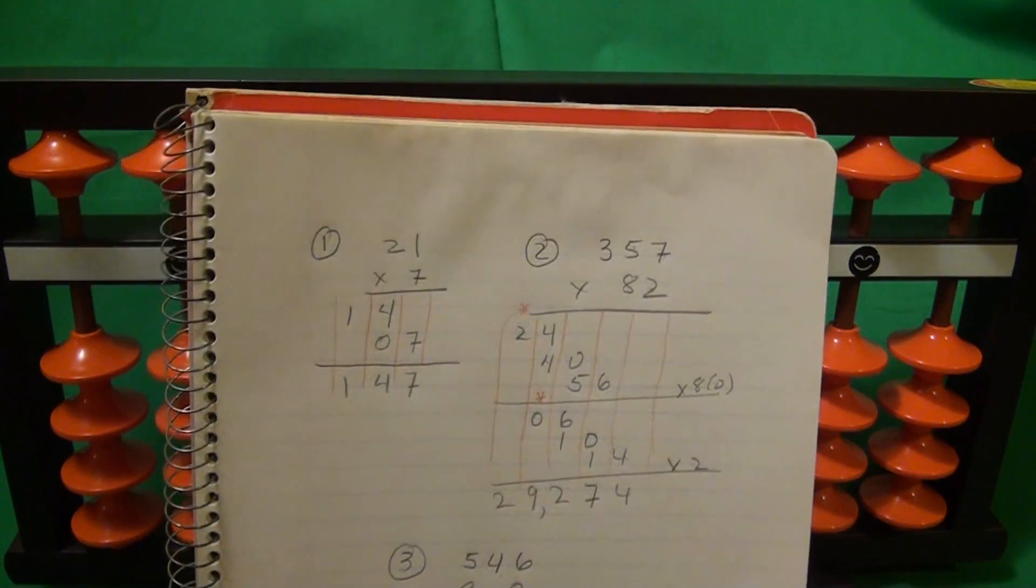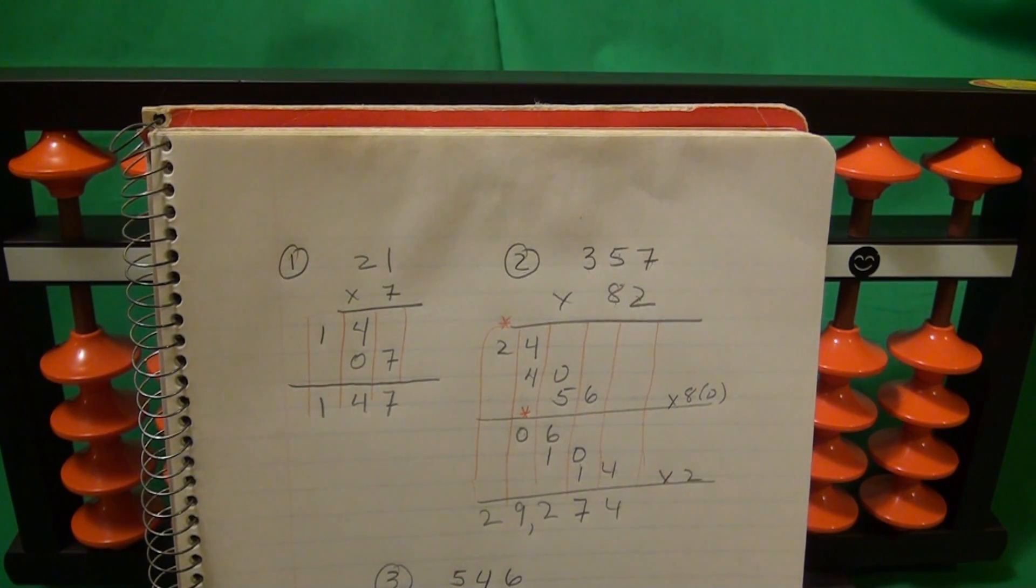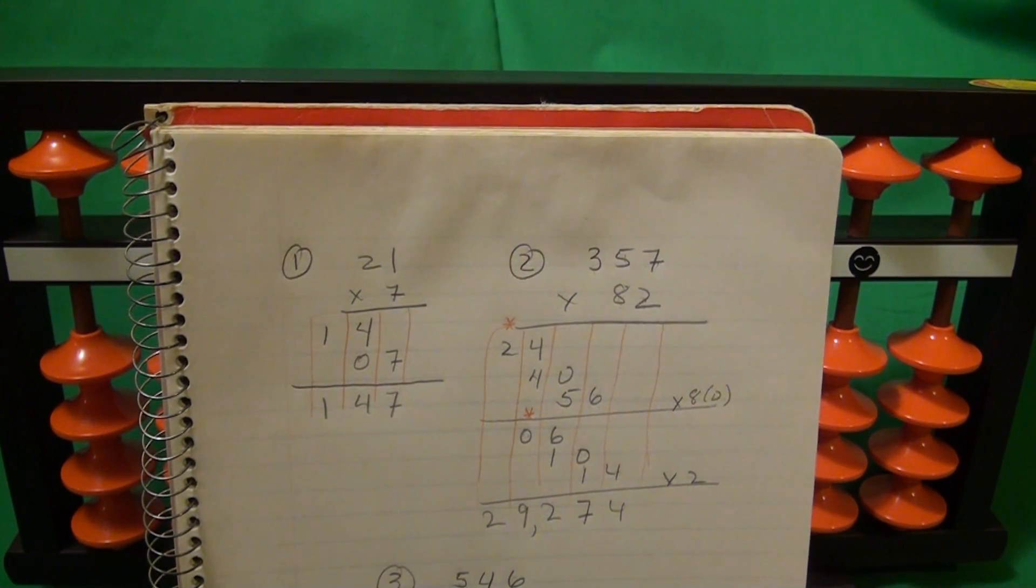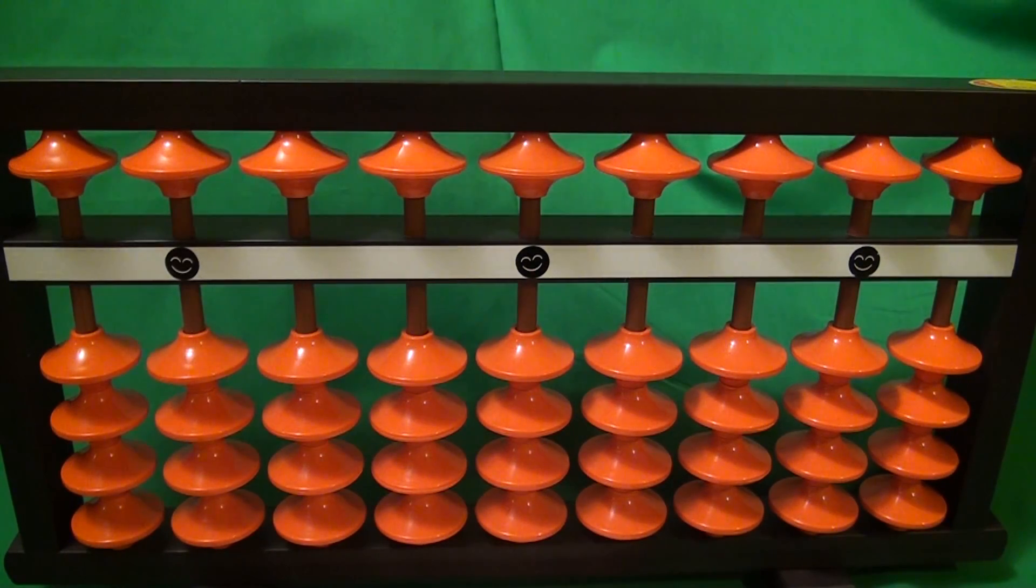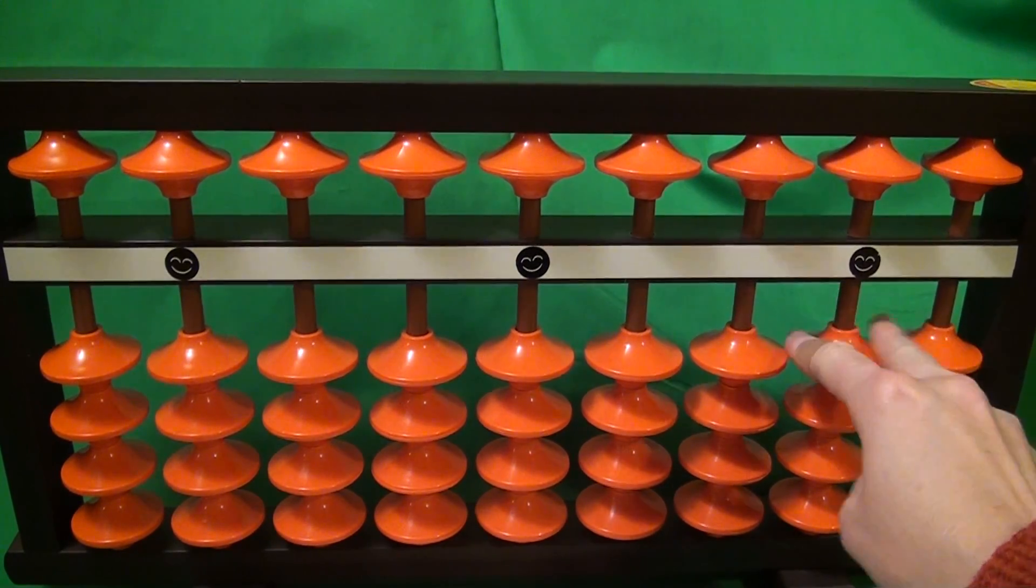So recall that our first example, number 1, was 2 digit times 1 digit, 21 times 7. So 2 digit times 1 digit, that's a total of 3 digits, so we have to start here. If this is our 1s, we have 1s, 10s, 100s.